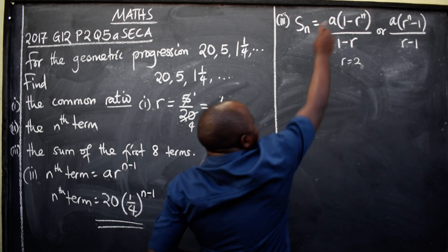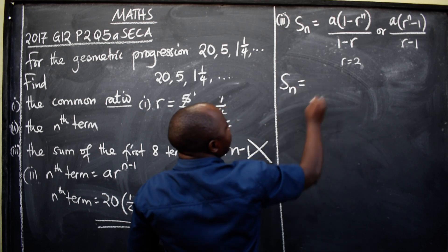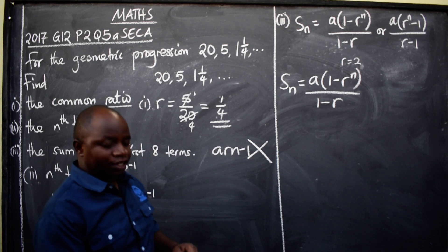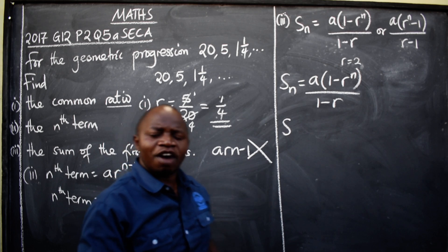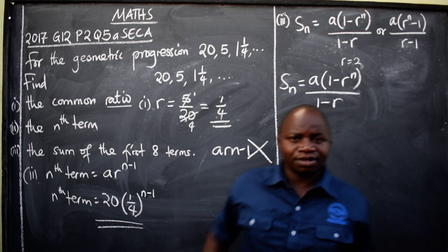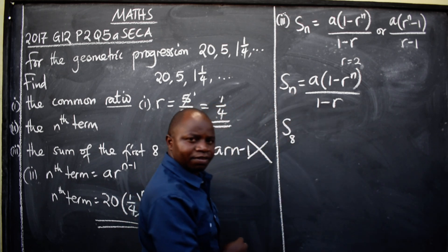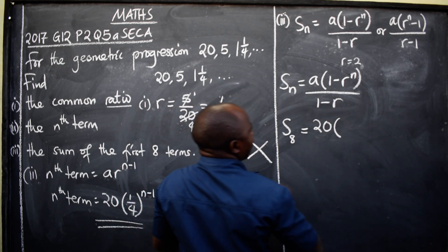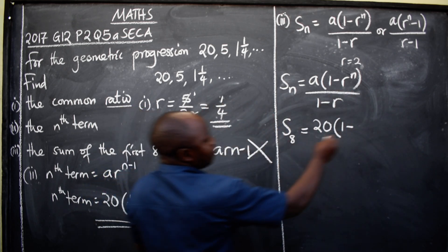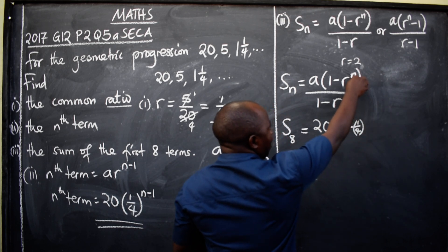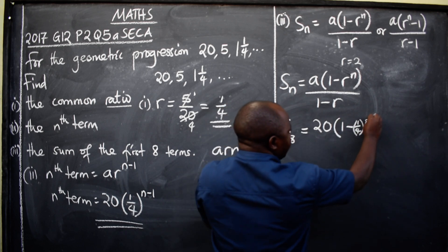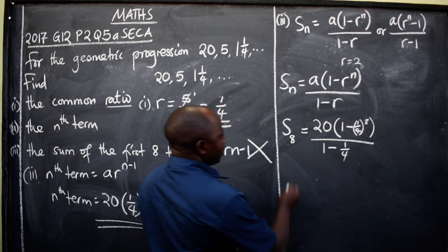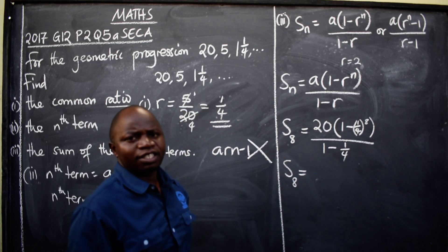Now we use: S = a(1 minus r^n) over (1 minus r). The sum of the first eight terms — so n equals 8. Substituting: S₈ = 20 times (1 minus (1/4)^8) over (1 minus 1/4). Since this is Paper 2, you are allowed to use a calculator. Put 1/4 in brackets when entering the power.